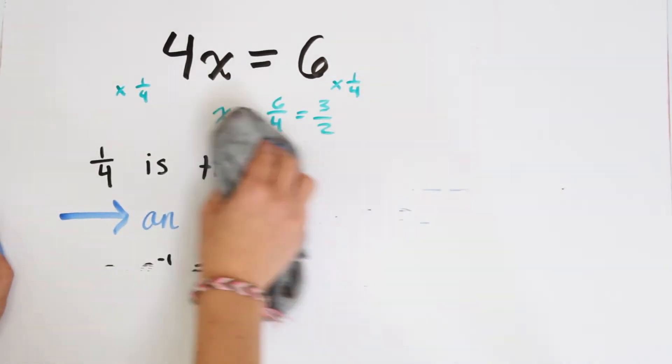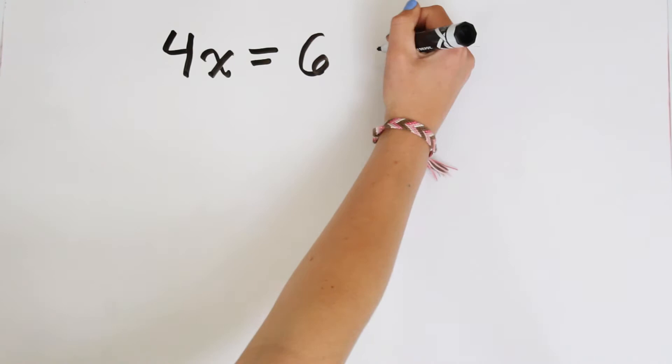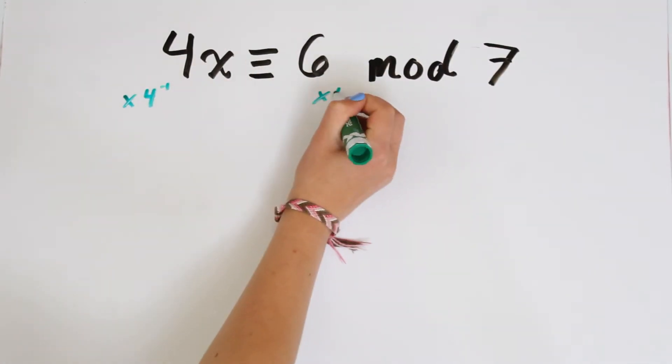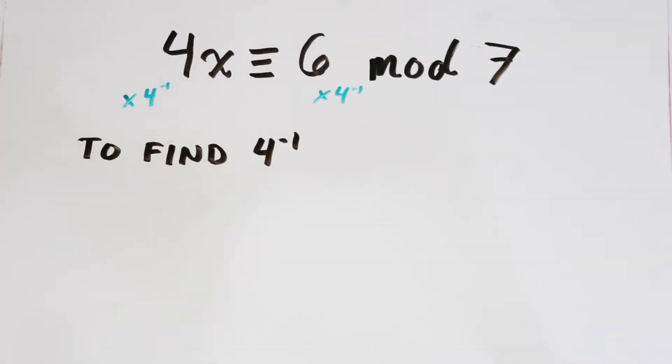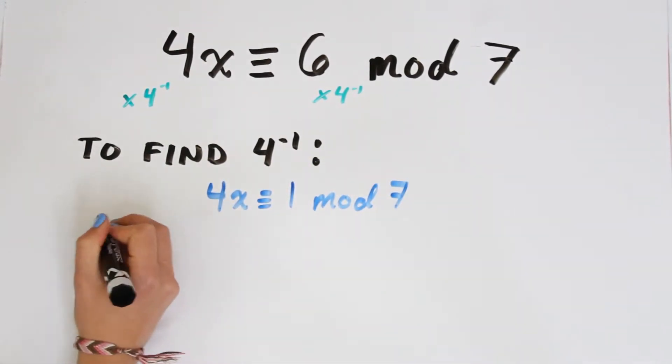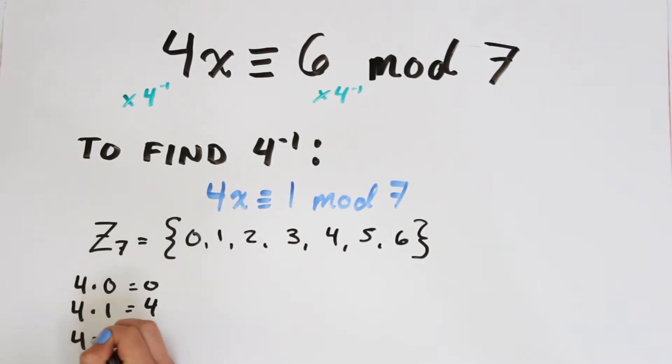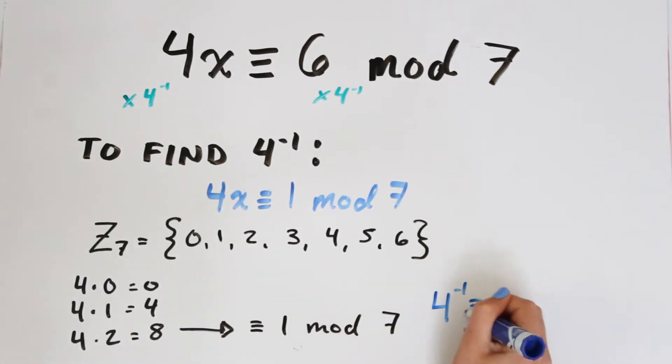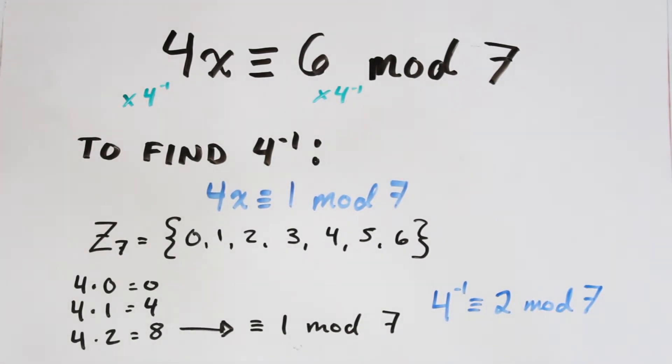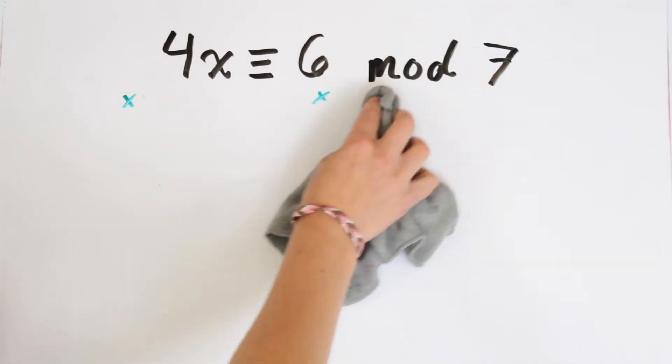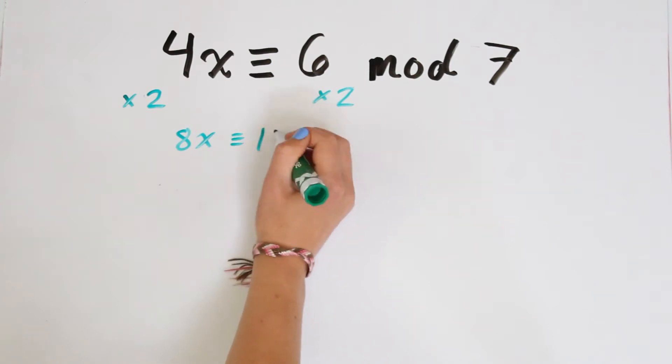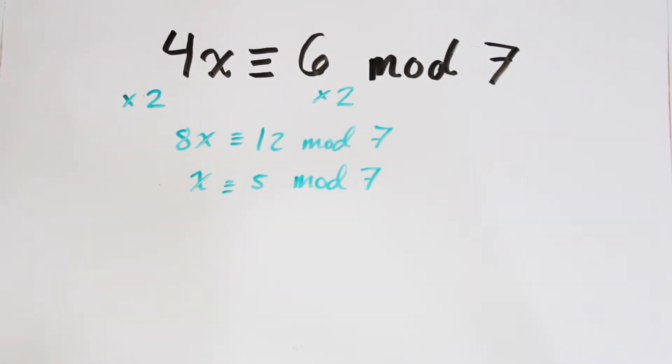So here we can see that to solve our congruence we just need to multiply both sides times 4 inverse. Okay, so to find 4 inverse we can use the definition of it. So 4 times x, x being 4 inverse, is congruent to 1 mod 7. So let's go through and test each of the remainders in Z7 which are 0, 1, 2, 3, 4, 5, 6, and going through each one we see 4 times 2 equals 8 which is then congruent to 1 mod 7. So therefore 4 inverse is 2. So we can go back to our original congruence and multiply each side by 2. And then we have 8x is congruent to 12 mod 7. So therefore x is congruent to 5 mod 7.